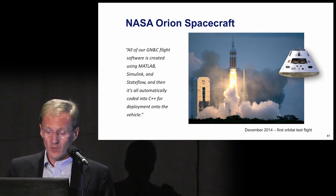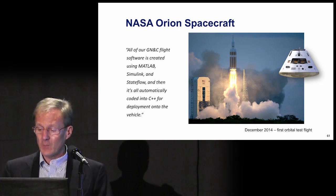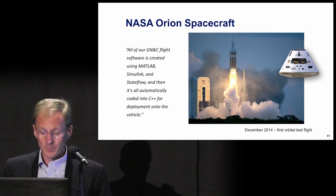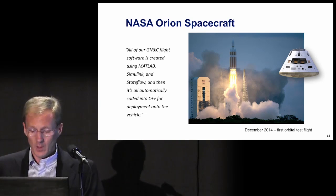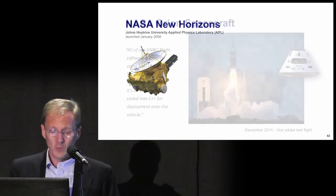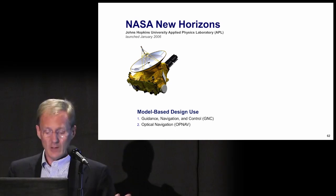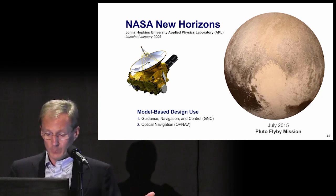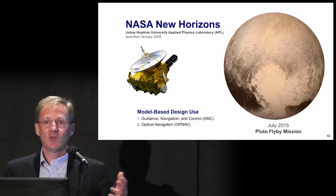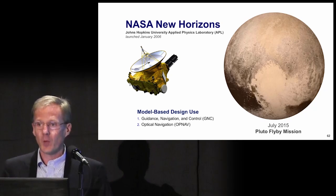A second aerospace example is the Orion spacecraft. The United States currently does not have the ability to launch humans into space. Orion is the next planned manned spacecraft for the U.S. to replace the space shuttle, intended to carry four to six astronauts. The first orbital test flight was about a year and a half ago. At the core of interesting things, you'll find control — and these are a success for control engineering as well as model-based design. Applied Physics Laboratory at Johns Hopkins built the New Horizons spacecraft using model-based design for the GNC, which went on to a flyby of Pluto last year, allowing humans to see Pluto for the first time in human history. These are remarkable successes of the controls community.